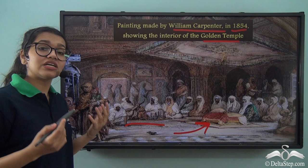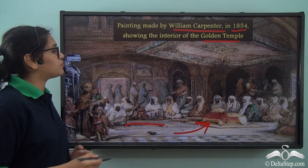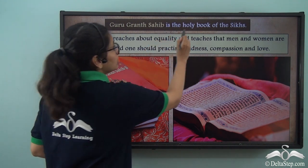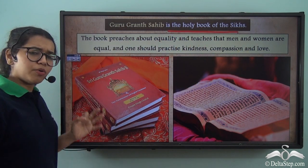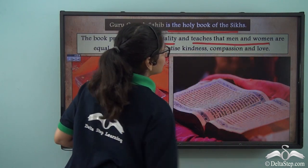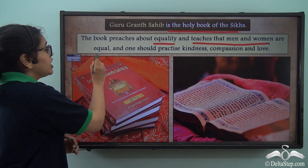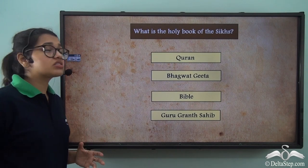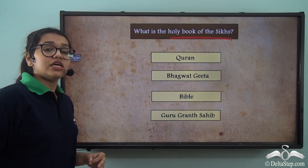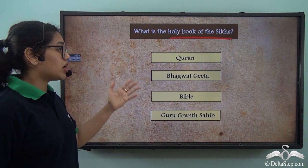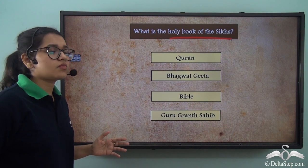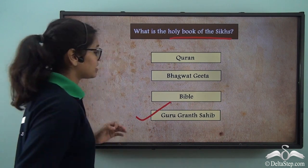Its name is Guru Granth Sahib, and that is the holy book for the Sikh people. The Guru Granth Sahib preaches about equality and teaches that men and women are equal, and that one should practice kindness, compassion, and love. Now, what is the holy book of the Sikhs? Is it the Quran, Bhagavad Gita, Bible, or Guru Granth Sahib? The correct answer is Guru Granth Sahib.